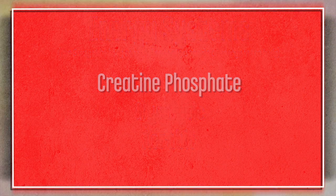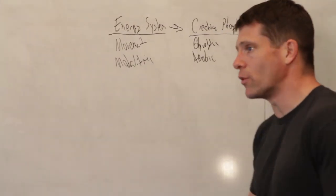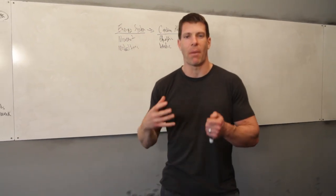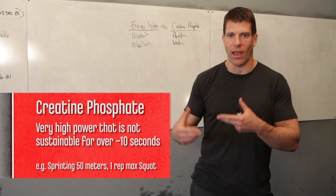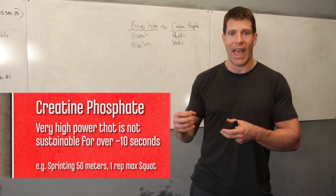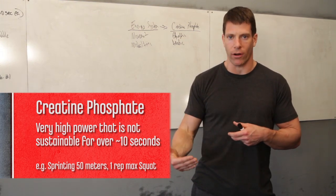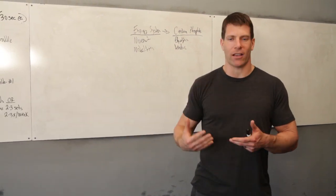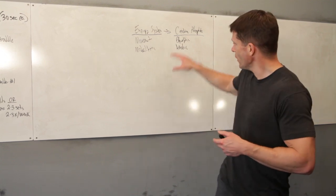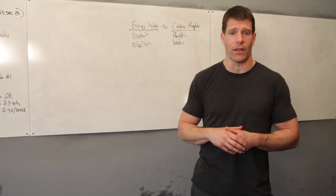The creatine phosphate system is going to give you between one to ten seconds or so of really powerful muscular contraction. This is the way that you synthesize ATP, which is energy, and make it do muscular work. If you're sprinting 25 to 50 meters, if you are doing a max rep deadlift, something like that, you're going to be predominantly in the creatine phosphate system.